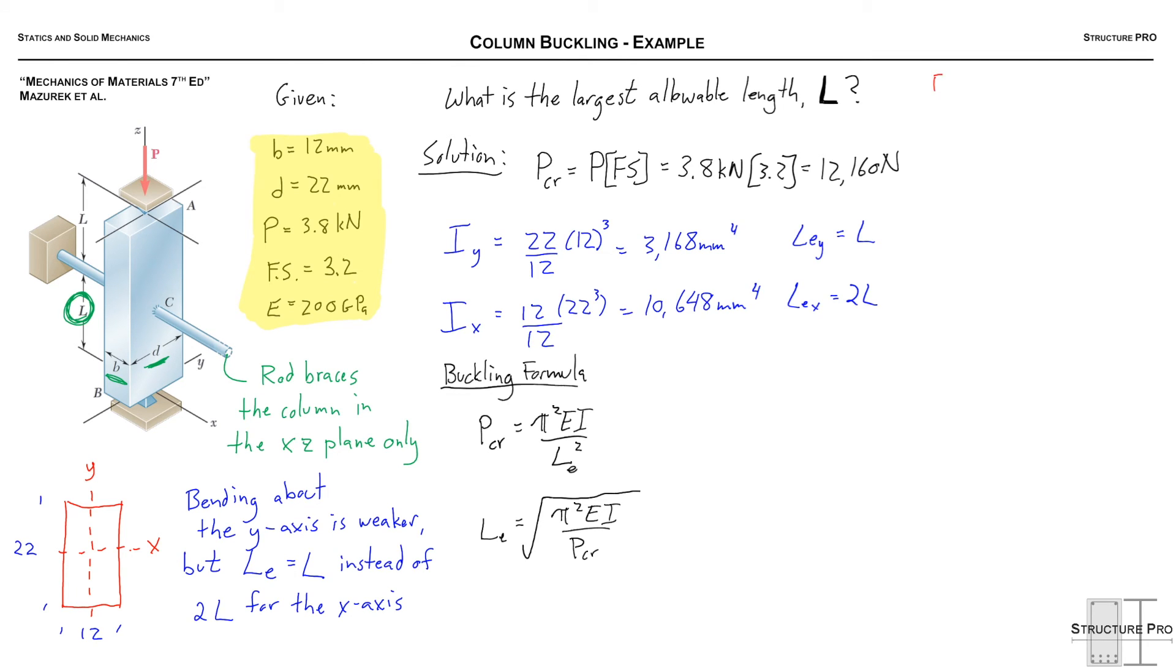Okay now we're ready to actually solve for our allowable lengths according to buckling about the Y plane and then buckling about the X plane. So let's start with buckling about the Y plane. This is the weak axis but we know that the effective length is only equal to L rather than 2L for the X plane.